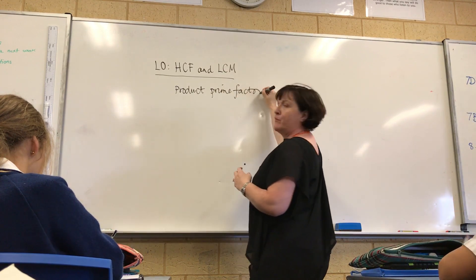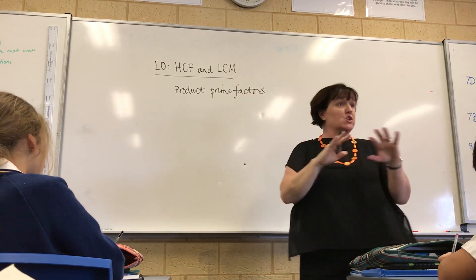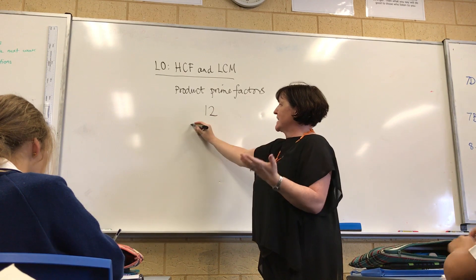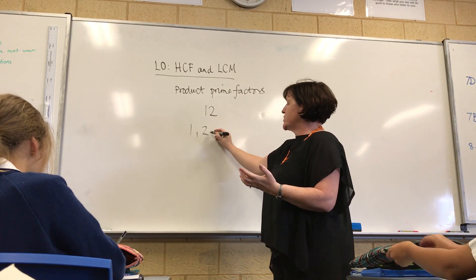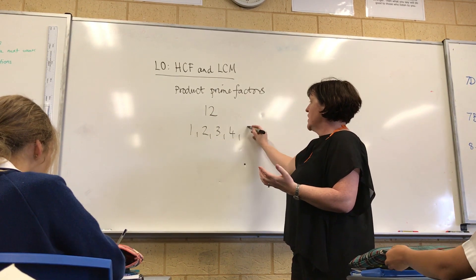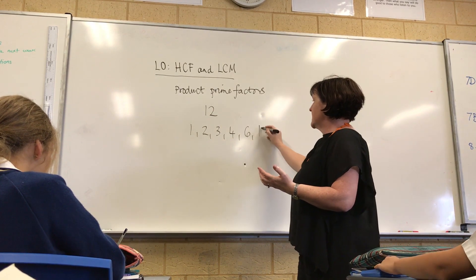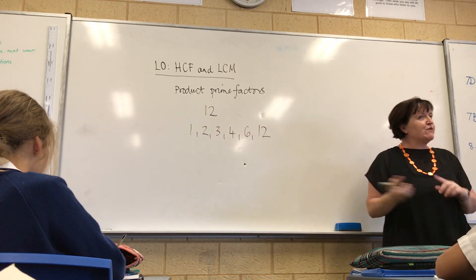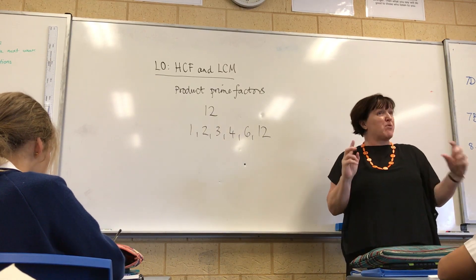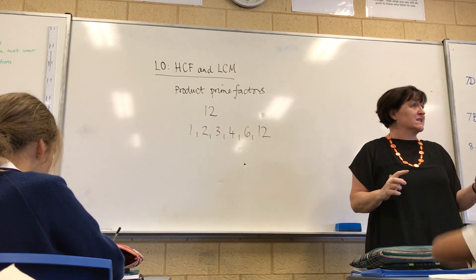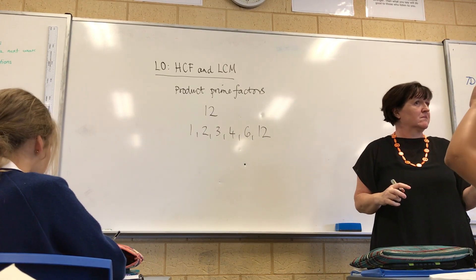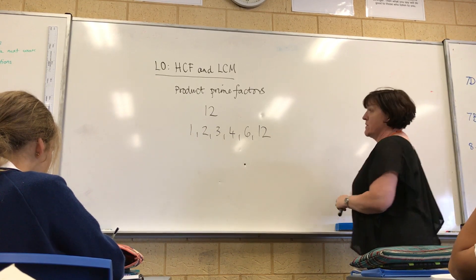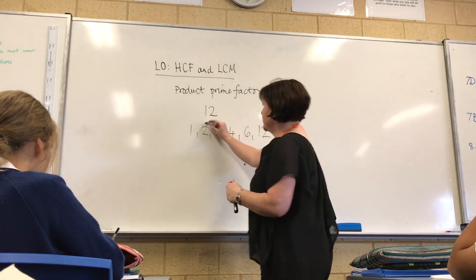Now, if we look at just a normal number like 12, its factors are 1, 2, 3, 4, 6, and 12. But which of those are prime factors? 2 and 3. That's right, 2 and 3.